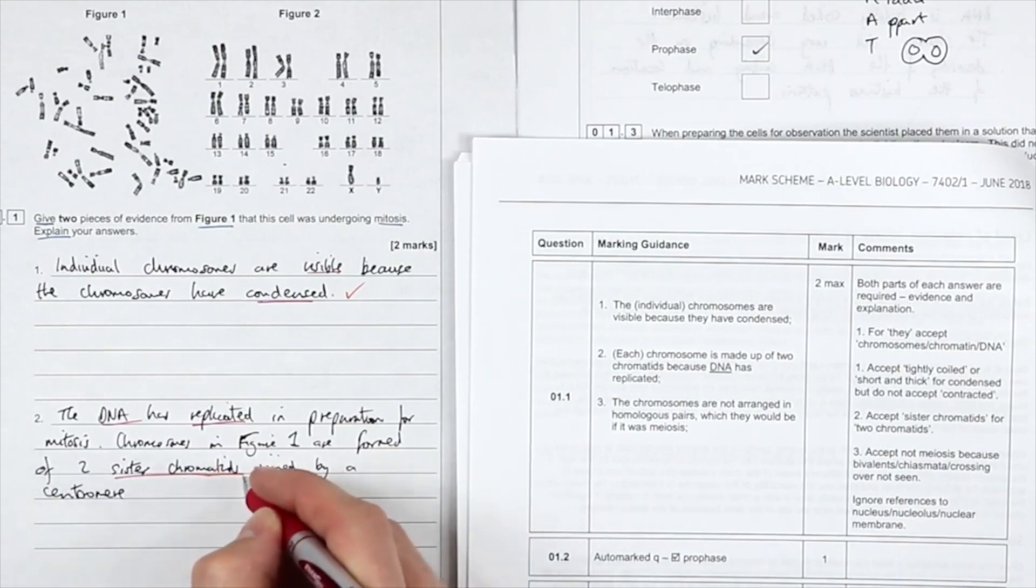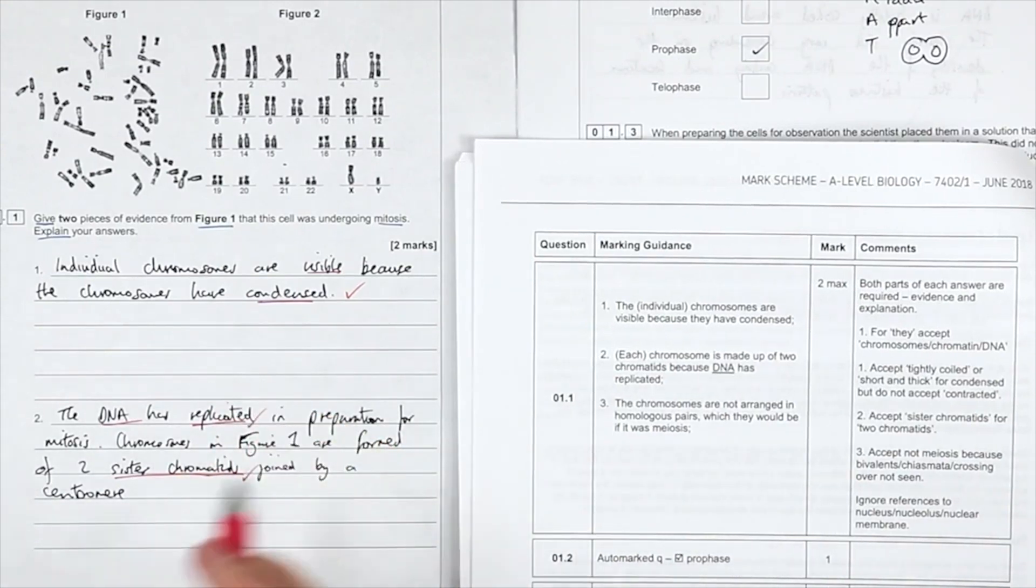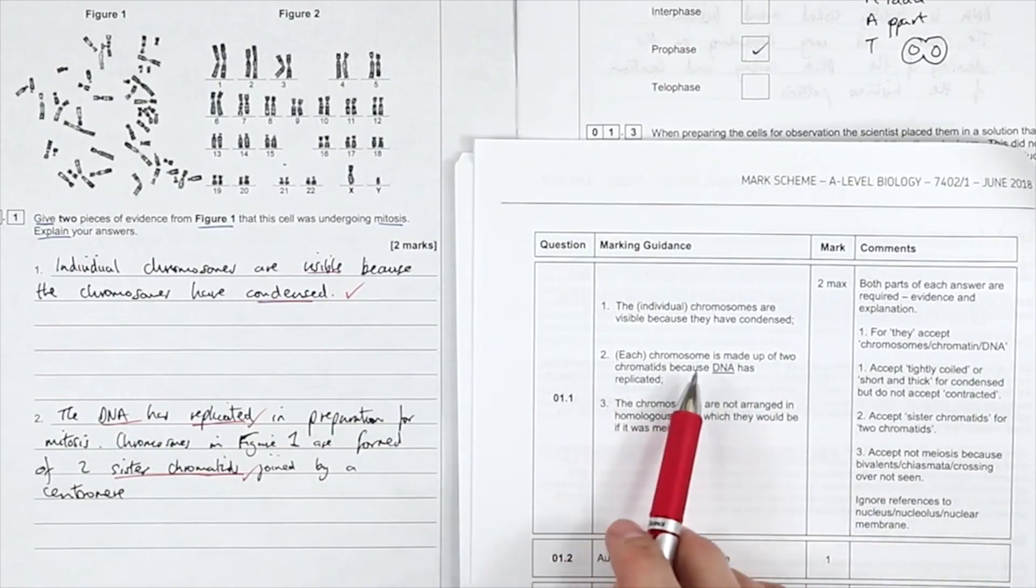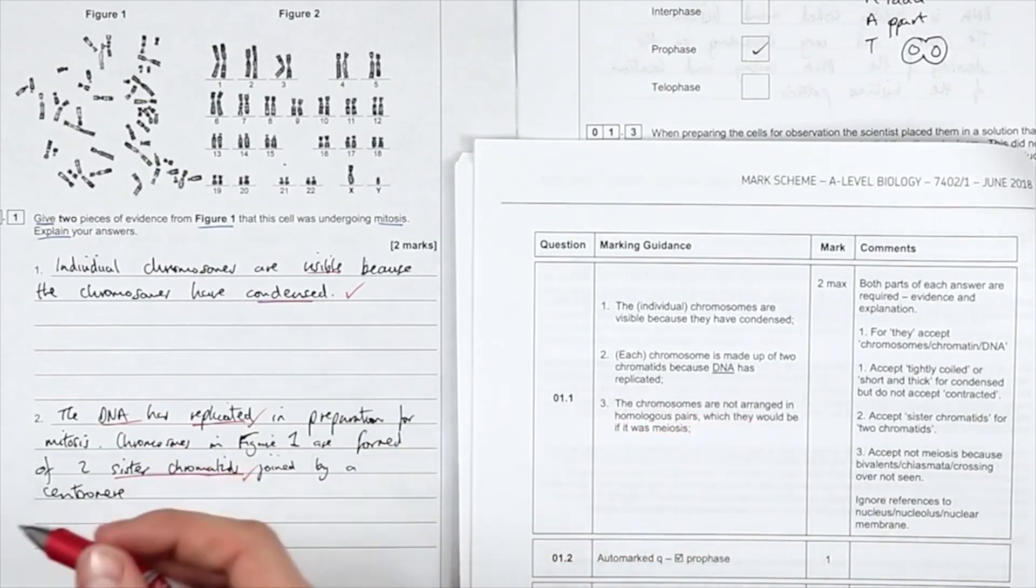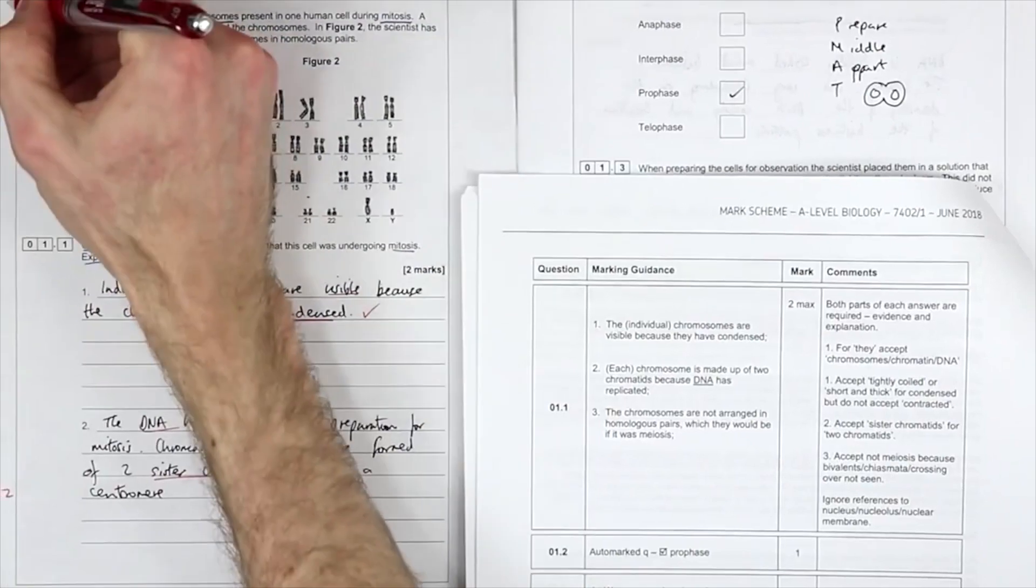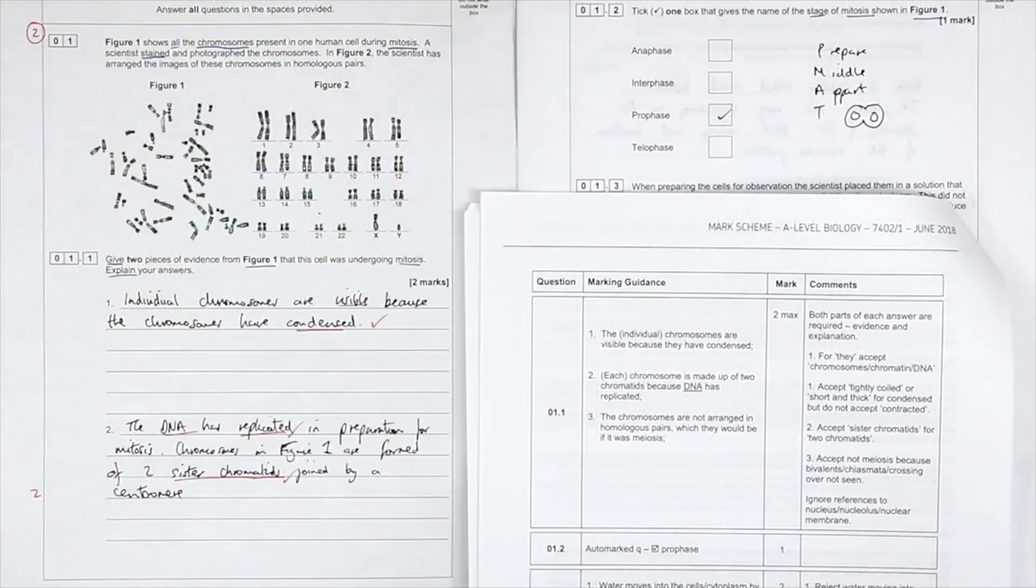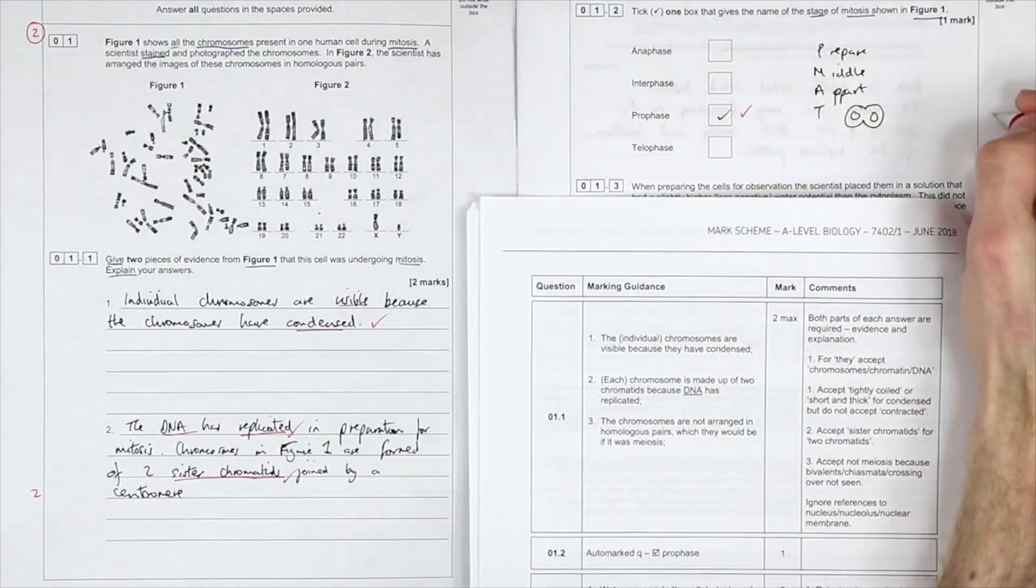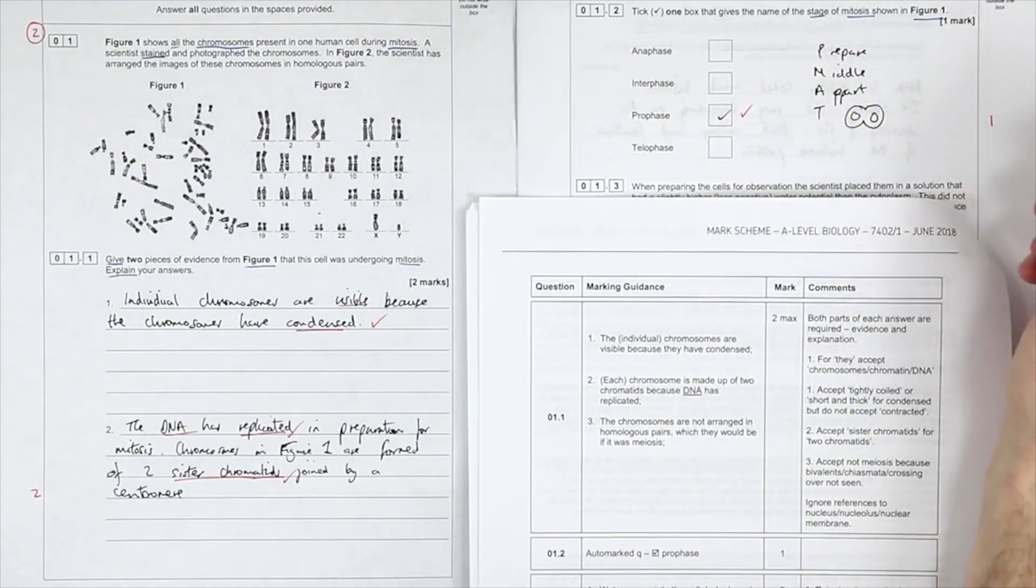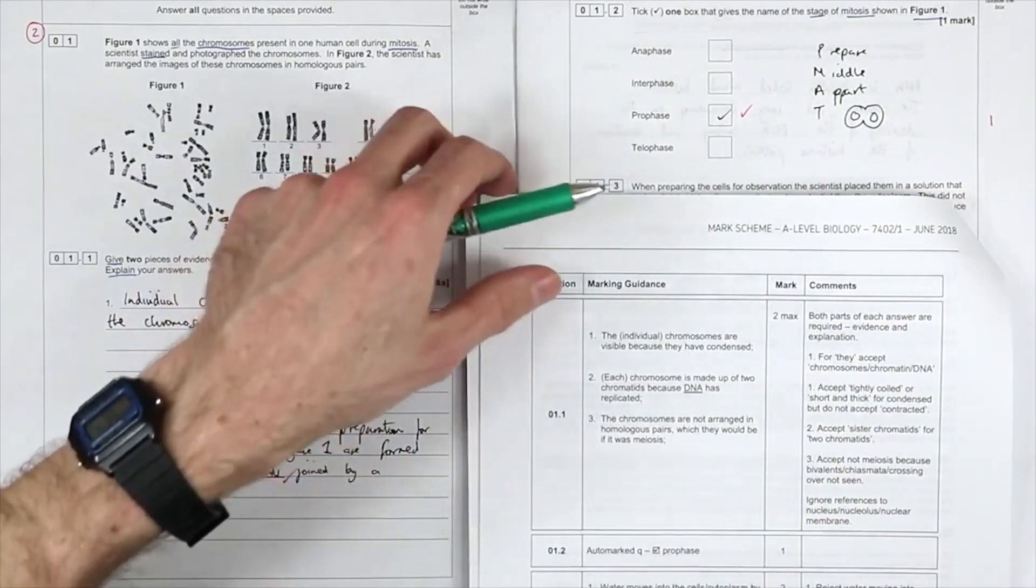But in fact, I'm going to take replicated because that's the bit that, oh no, if not, it's the DNA that's actually underlined. Two marks here. Auto-marked, prophase. These are, without a doubt, things that you should know.